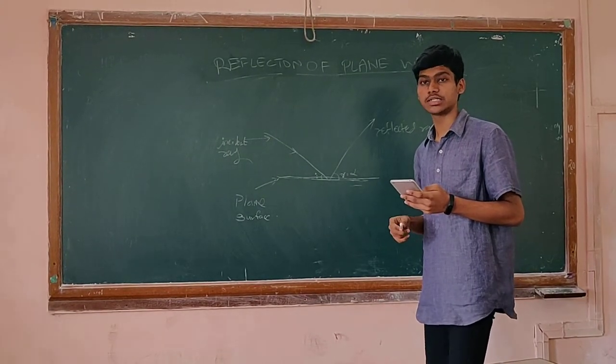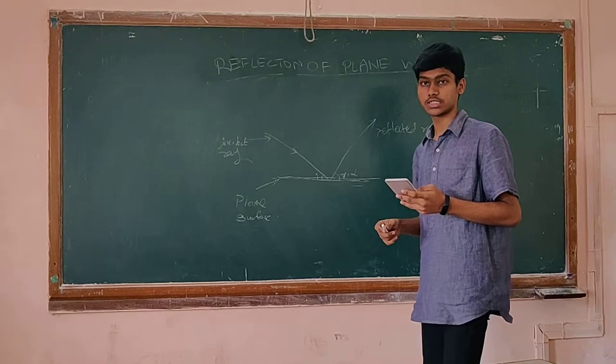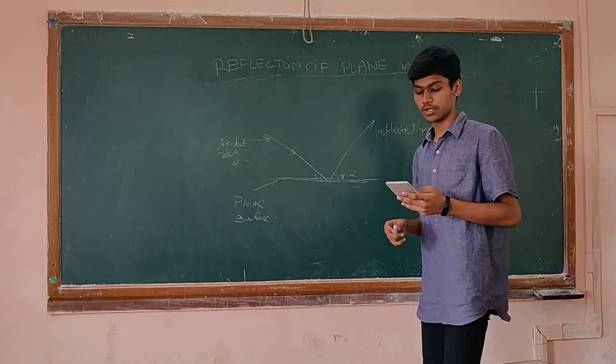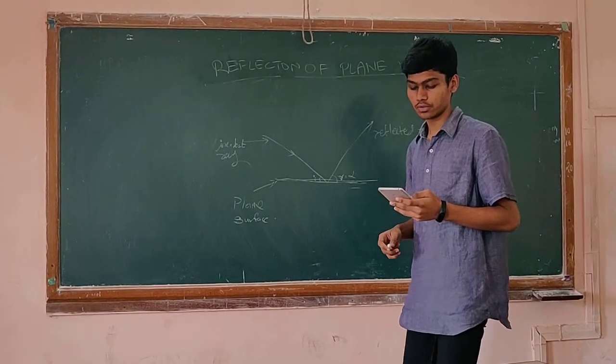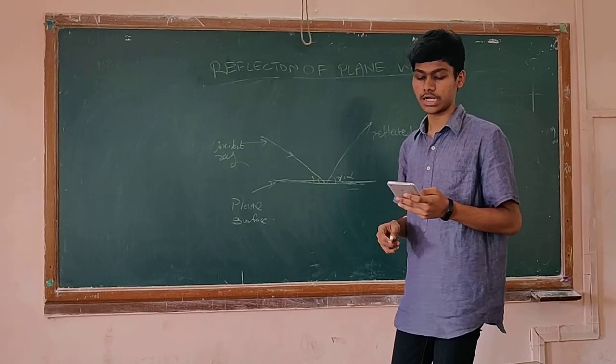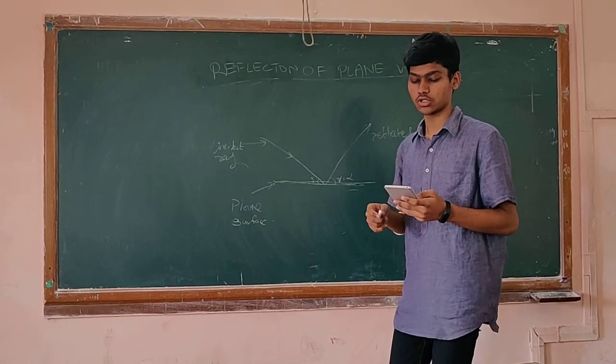A wavefront is a real or imaginary surface where the phase of oscillation is the same. The Huygens principle of wave theory of light is proven by the laws of reflection and is used to prove the laws of reflection.